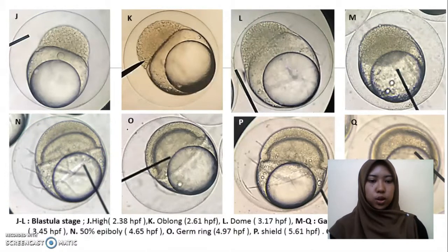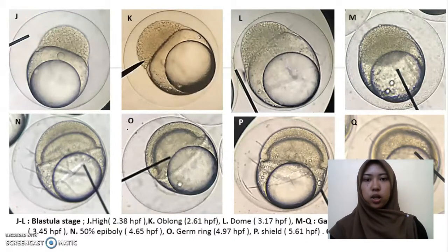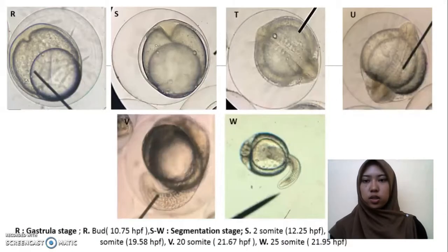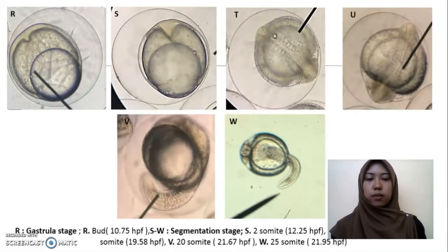One of the longest times a cell took to change its stage was from 30% epiboly to 50% epiboly, which took 2 hours. Also, from the shield stage changing to 70% epiboly also took 2 hours, which was the longest transition time recorded. The last stage recorded was the 25-somite stage, observed at 4:42 PM, which was 21.95 hours post-fertilization.